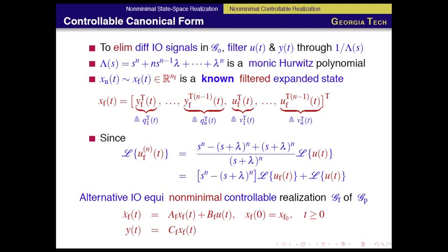Equivalently, an alternative input-output equivalent nonminimal controllable realization of the filtered system can be given in this form: xn dot equals Af xn plus Bf un.